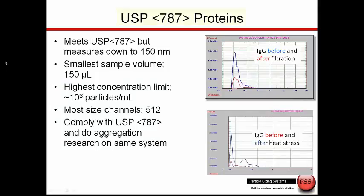The system can also be used for USP 787 testing of therapeutic proteins. The pass-fail criteria for this test is also at 10 and 25 microns, but we can also measure down at smaller size ranges where the data is much more interesting in understanding protein aggregation phenomenon. We can measure down to 150 nanometers with this sensor.